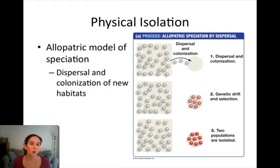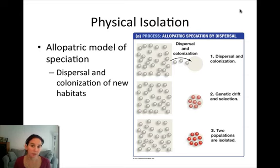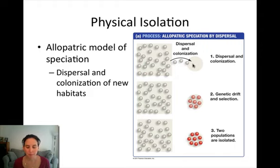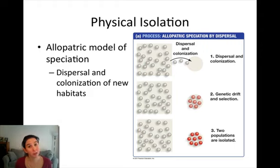The first way is dispersal and colonization of a new habitat. If you look at this figure from your textbook, it shows a group of organisms dispersing into a new habitat and then genetic drift and selection acting on that new population, so the two populations become genetically different from one another. This should remind you of the founder effect and bottleneck effect — two processes that actually cause genetic drift.